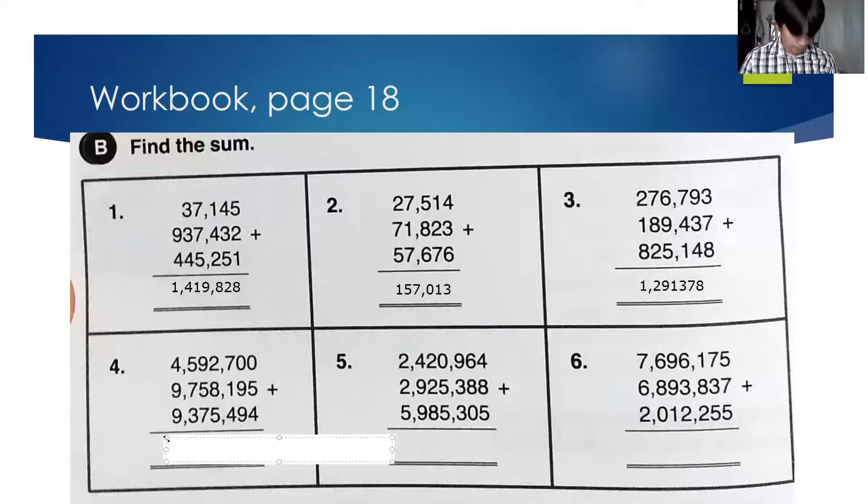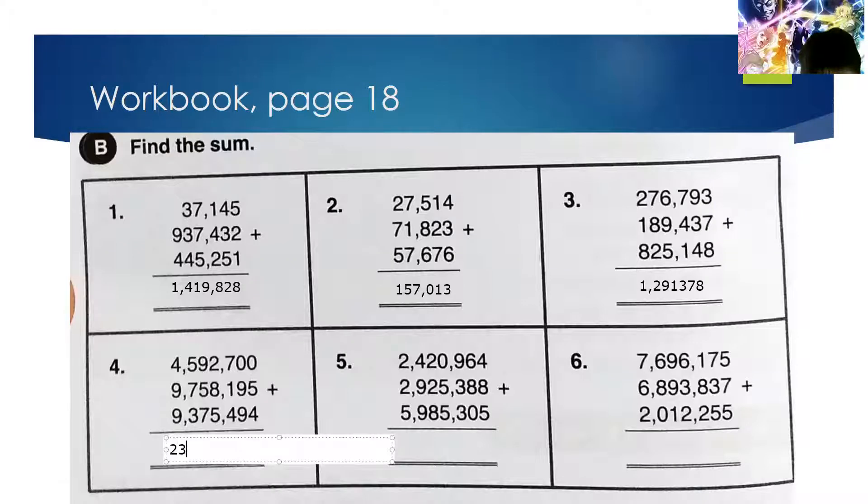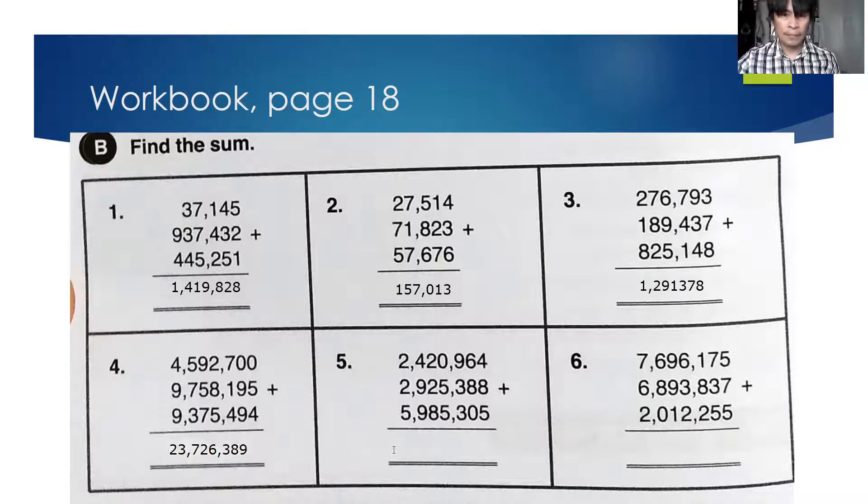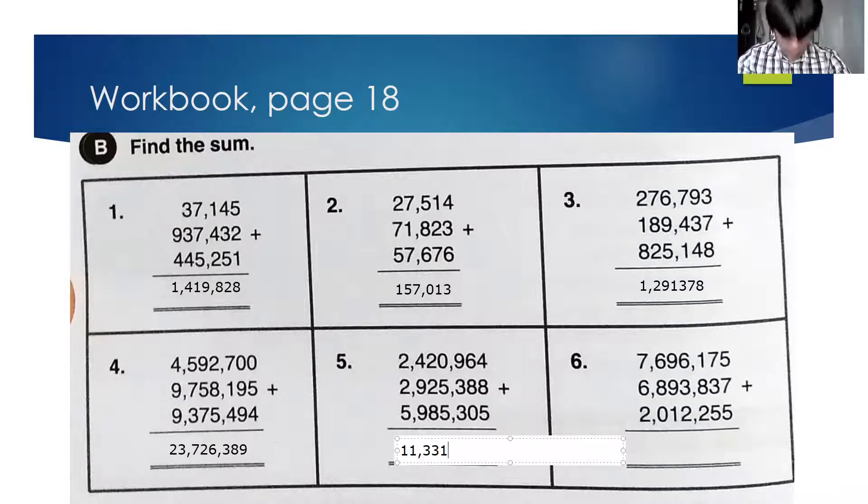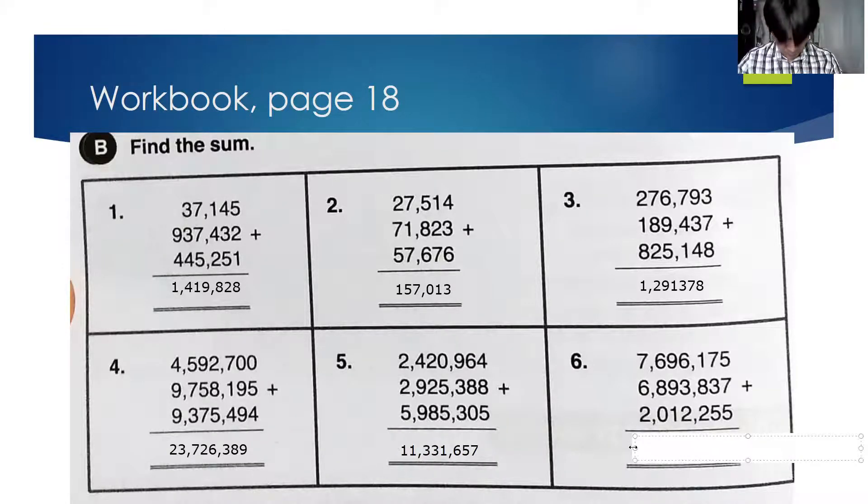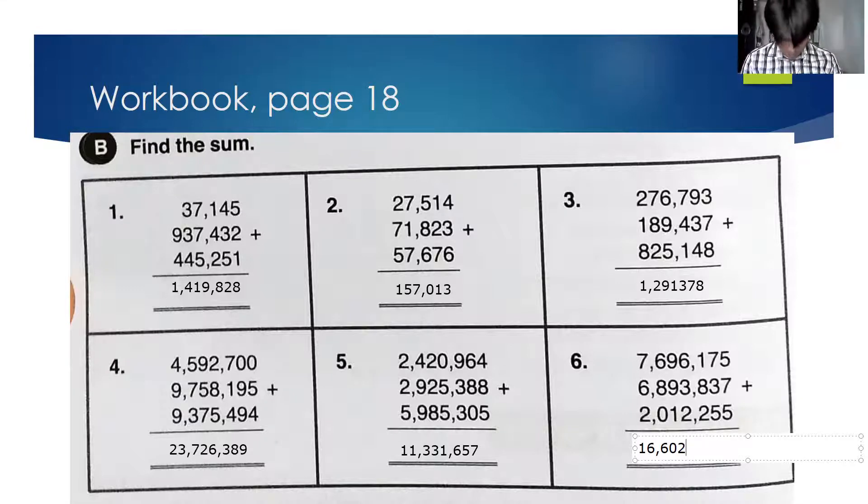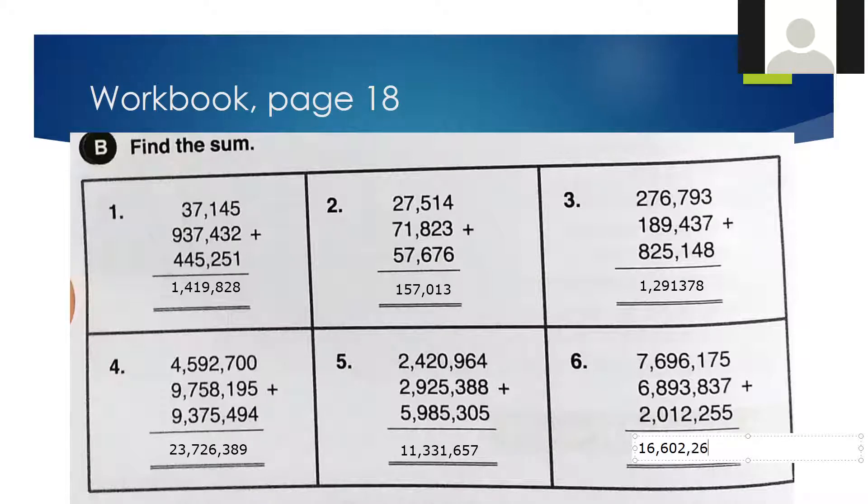Number four, so I've got no mistakes yet, right? 23,726,389. Number five: 11,331,657. Number six, you can put comma, 602,260. Okay, thank you.